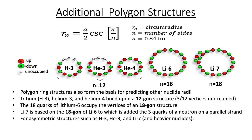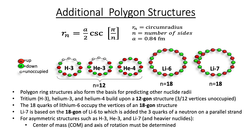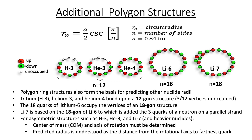For asymmetric structures such as tritium, helium-3, and lithium-7, as well as the heavier nuclides, center of mass and axis of rotation must be considered. The predicted radius is understood as the distance from the rotational axis to the farthest quark.